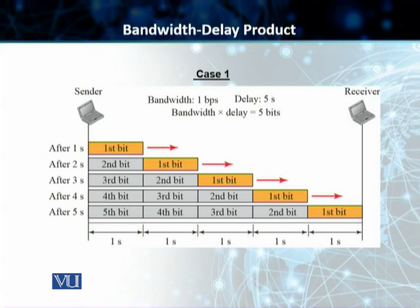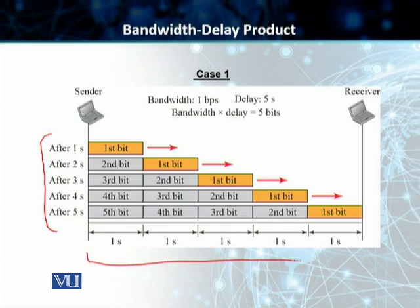You will see the transmission from the sender side. Every second, one bit is transmitted over the medium. The bandwidth delay product gives you five bits, which ultimately means that we need five bits to fill up this link fully. You can see that after five seconds, five bits have filled up this link fully. In other words, there cannot be more than five bits at any point in time on the link.